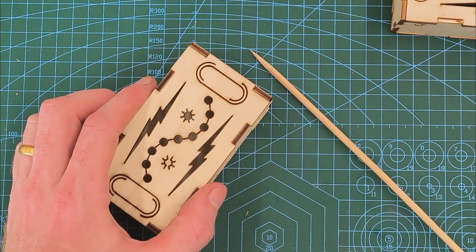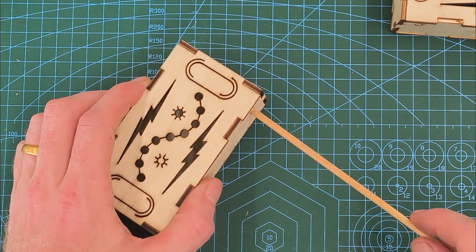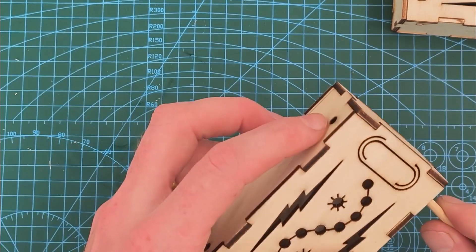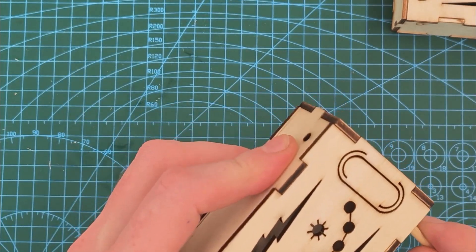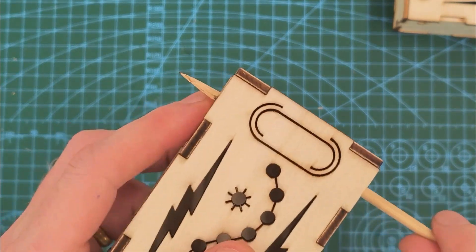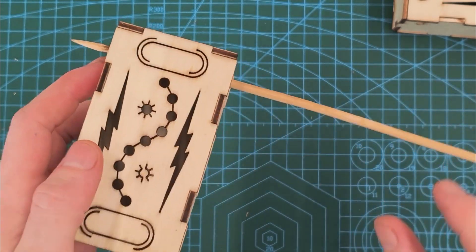All right, after you have your box assembled like this, what you want to do is take one of the skewers and put it through the hole here. And just do a little bit of twisting, and then you want to so that it pops through the other side as well, just like so.